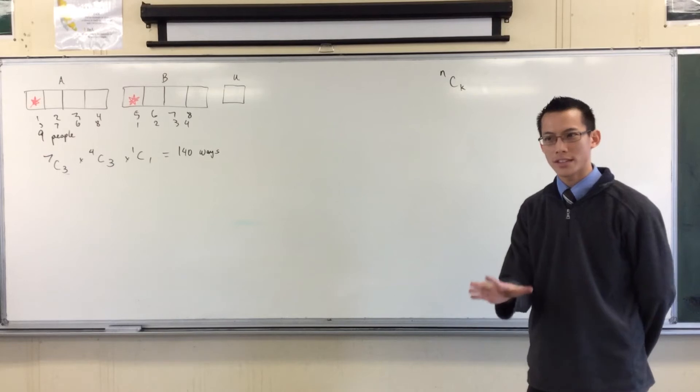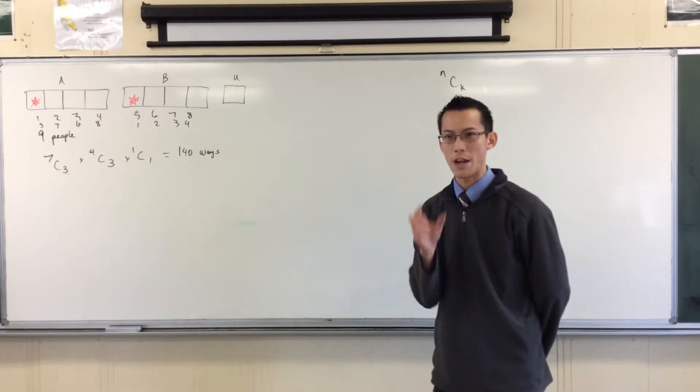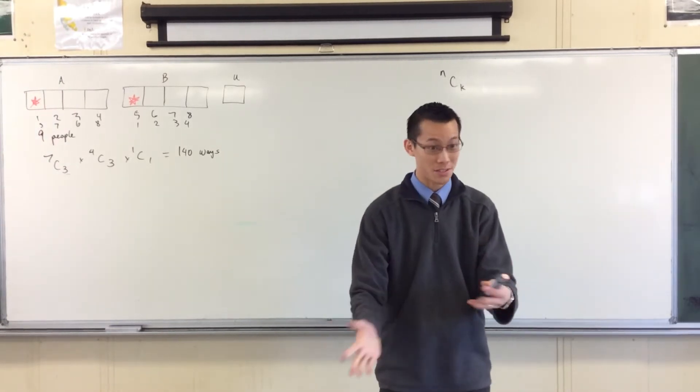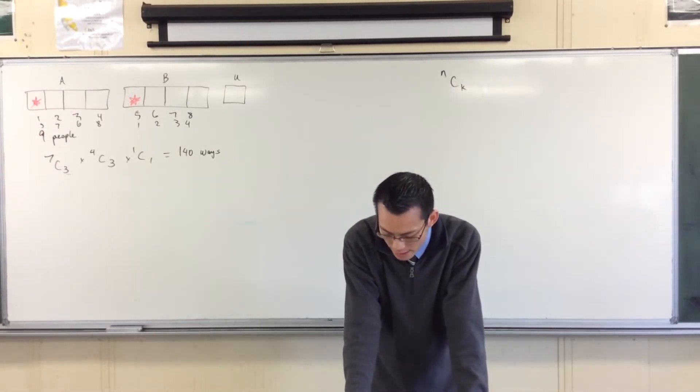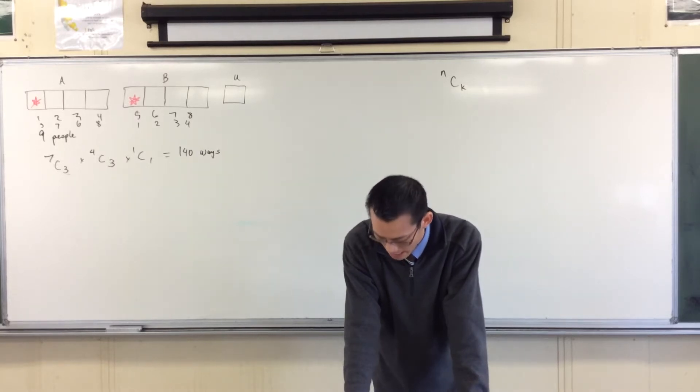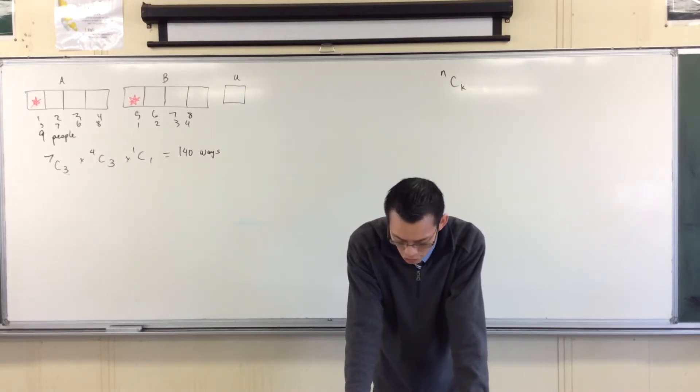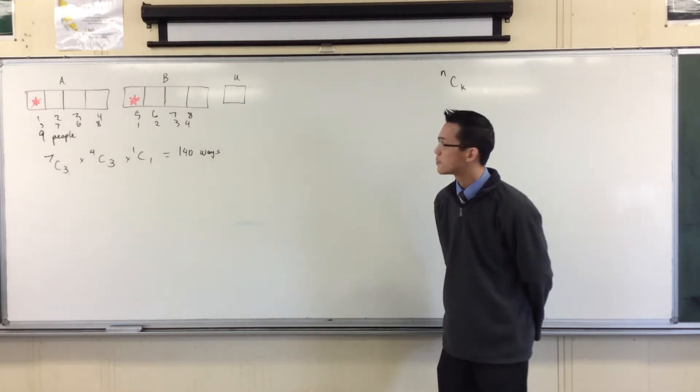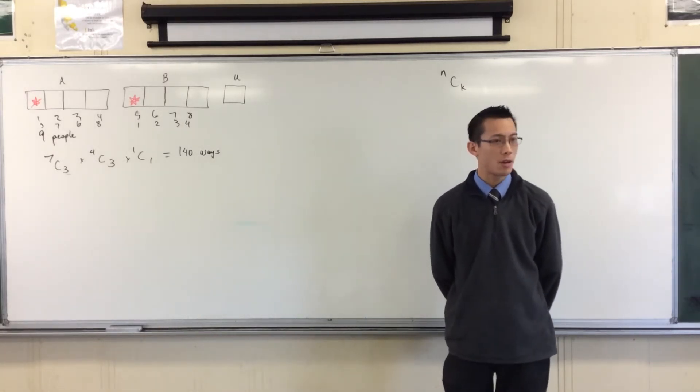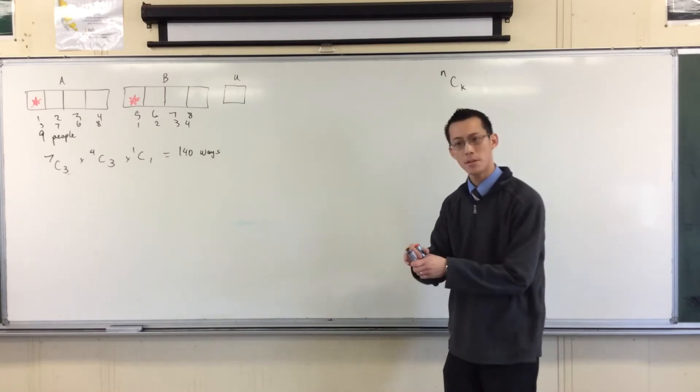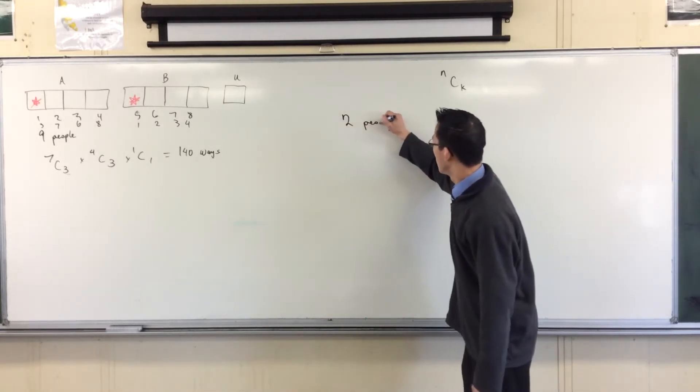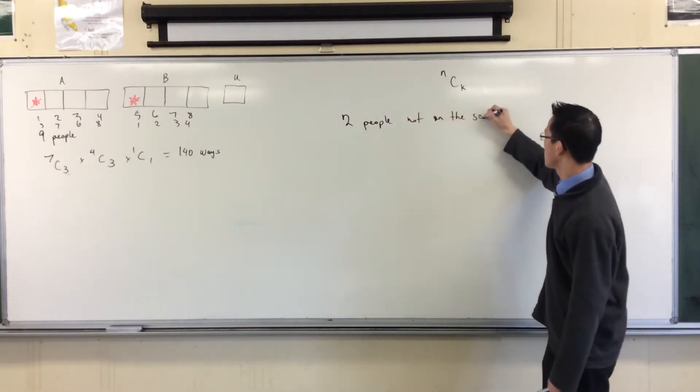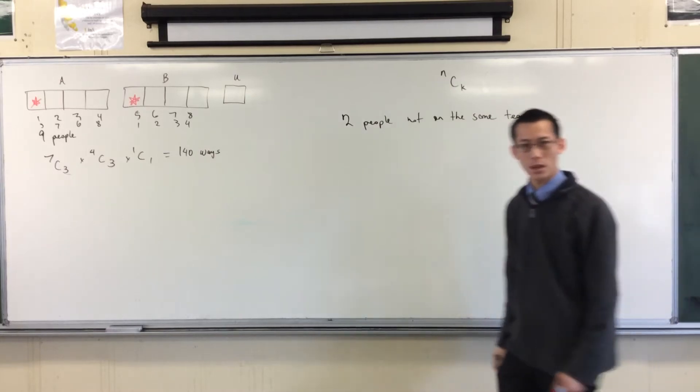Now, no one worked it out yet. I want you to come back with me to the question. Read it very carefully. We're going to do this over and over again. What are we missing? It's there in the question. Read it with me. If two particular people cannot be on the same team, how many different combinations are possible?